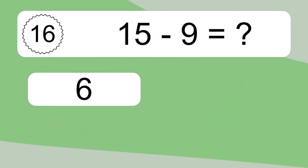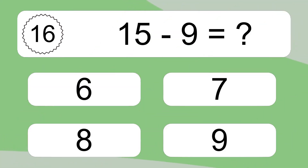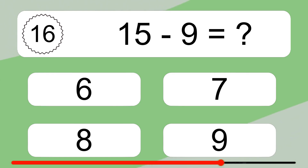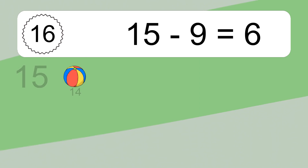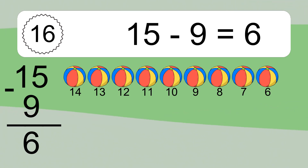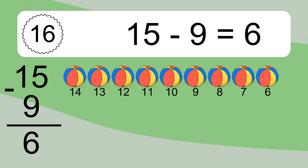15 minus 9 equals what? 15 minus 9 equals 6. Let's count it: 14, 13, 12, 11, 10, 9, 8, 7, 6.